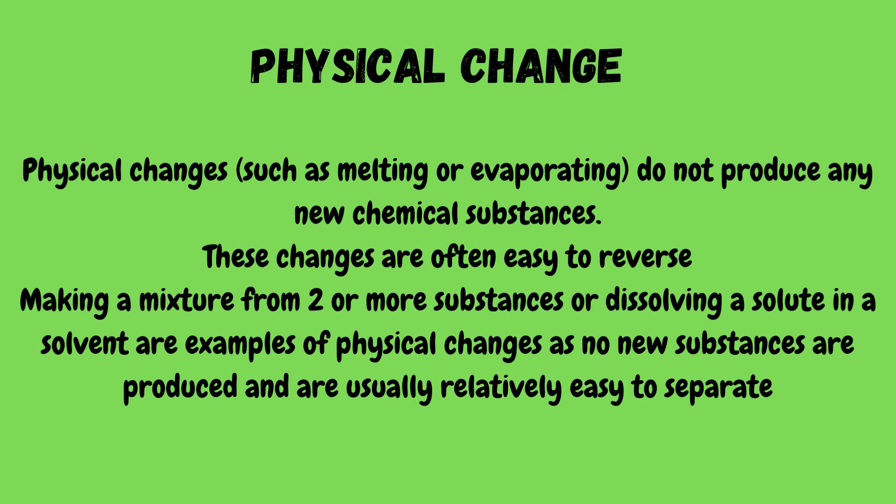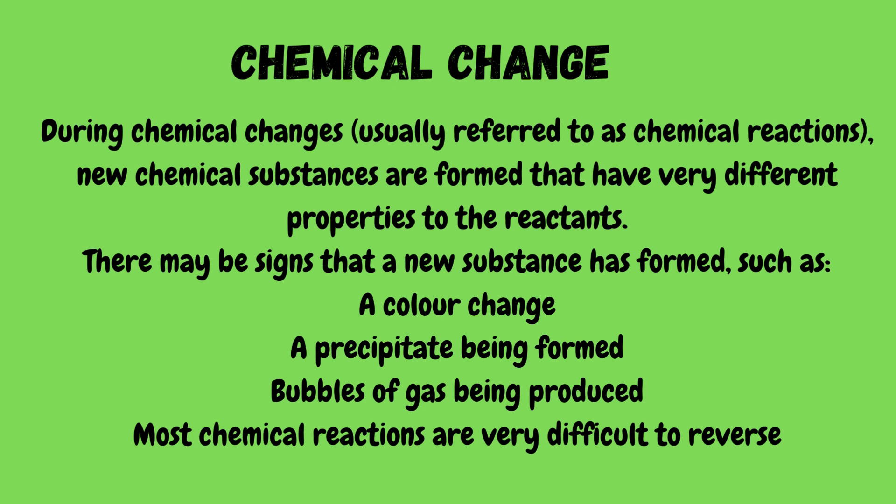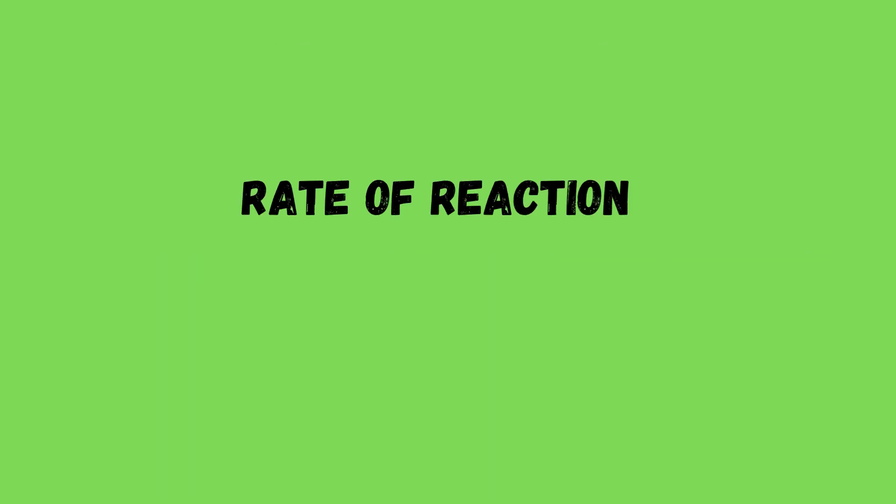A physical change does not produce any new chemical substances. These changes are often easy to reverse. Making a mixture from two or more substances, or dissolving a solute in a solvent, are examples of physical changes, as no new substances are produced and they are usually relatively easy to separate. During chemical changes, usually referred to as chemical reactions, new chemical substances are formed that have very different properties to the reactants. There may be signs that a new substance has formed, such as a color change, a precipitate formation, or gas formation. Most chemical reactions are very difficult to reverse.